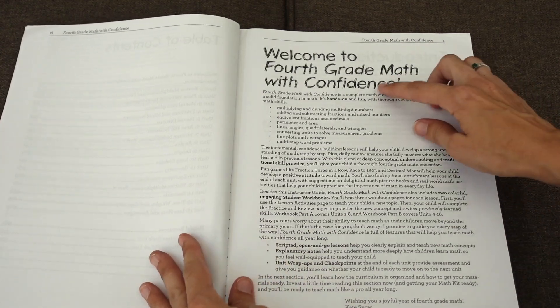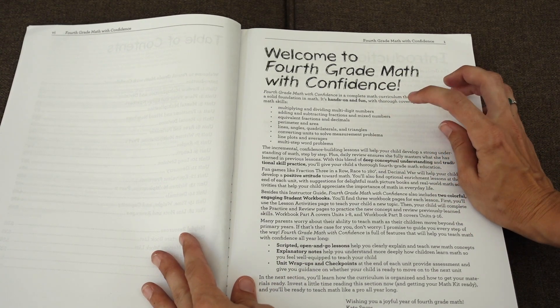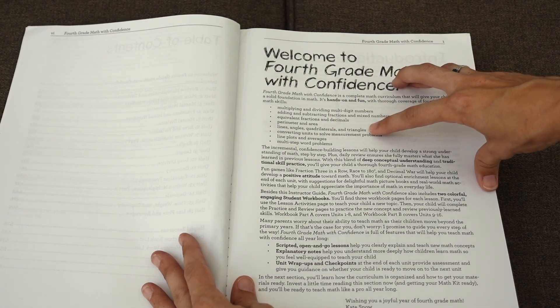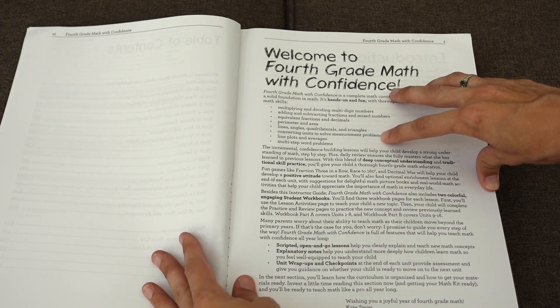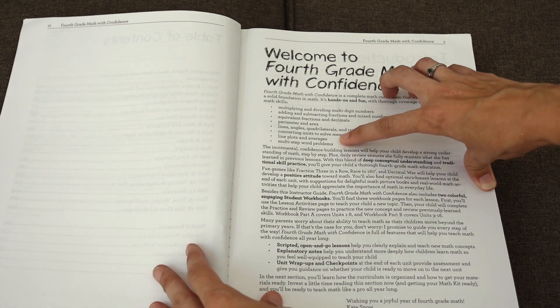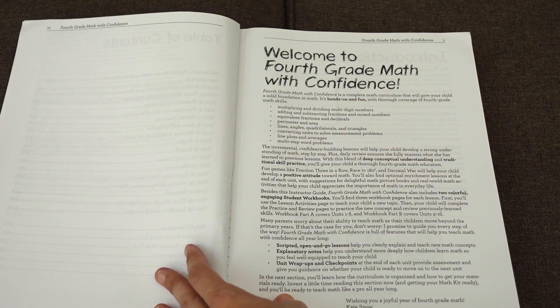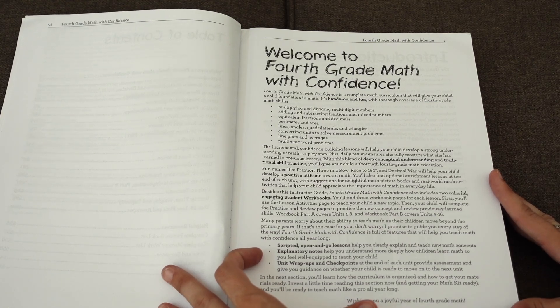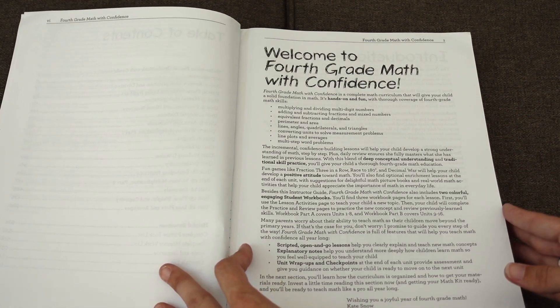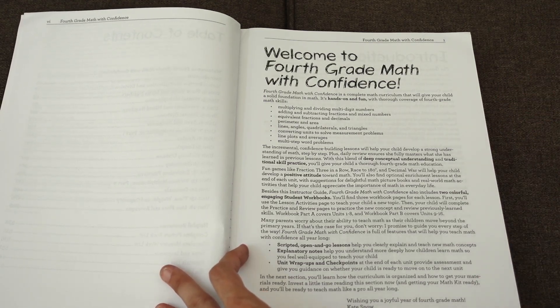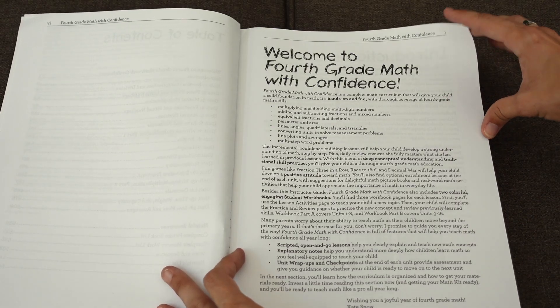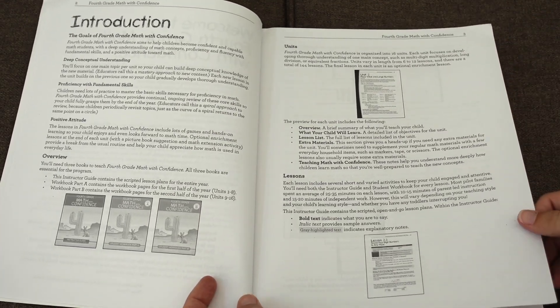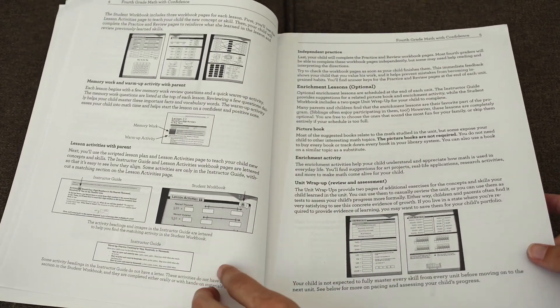First of all, what topics are going to be covered? You'll be multiplying and dividing multi-digit numbers, adding and subtracting fractions and mixed numbers, learning about equivalent fractions and decimals, perimeter and area, some geography topics, lines and angles, conversion of units to solve measurement problems, line plots and averages, multi-step word problems. So that's the summarized scope and sequence of the types of topics that you will be going over in fourth grade Math with Confidence. And I would say that this is pretty on par with typical fourth grade standards or objectives.